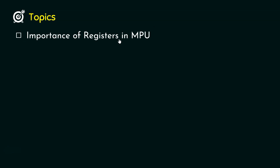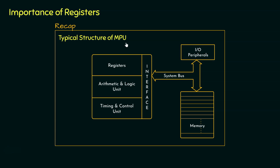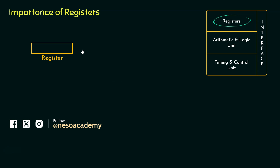Today we will learn about the importance of registers in MPU, or microprocessing units. In the previous session we had seen the typical structure of the MPU, and we also had a brief overview of the register section for the 8085 microprocessor. Today we are going to find out the answer to the question: why exactly are registers used? Registers, or sets of flip-flops, are used in the microprocessing unit for temporary storage of various kinds of information.